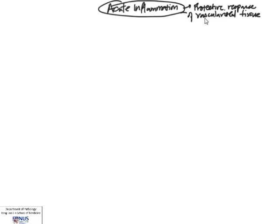In this mind map, we're going to look at acute inflammation. Before we start, let's try to define acute inflammation. This is a protective response of the body of vascularized tissue that aims to neutralize and eliminate agents that cause injury, as well as our own dead tissue. It's essentially a response of living tissue to any injurious agents.